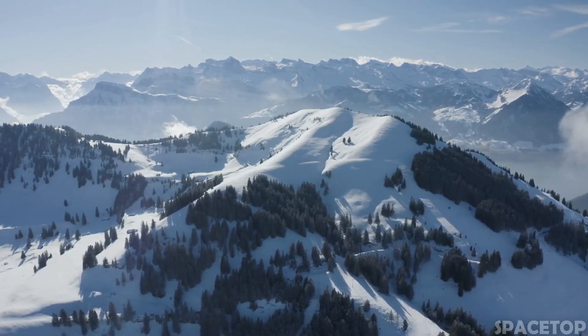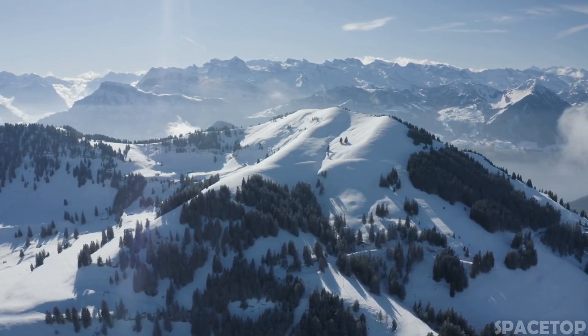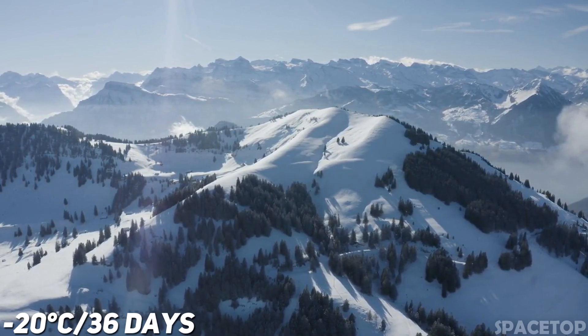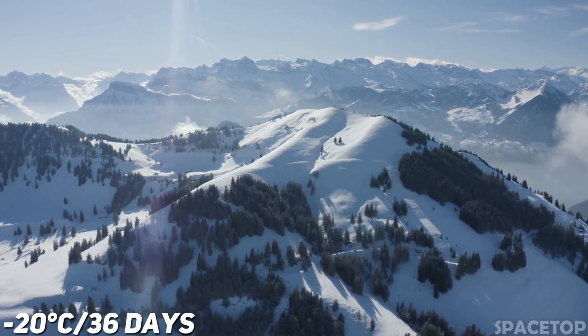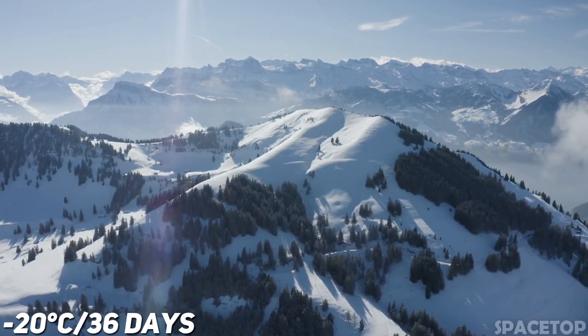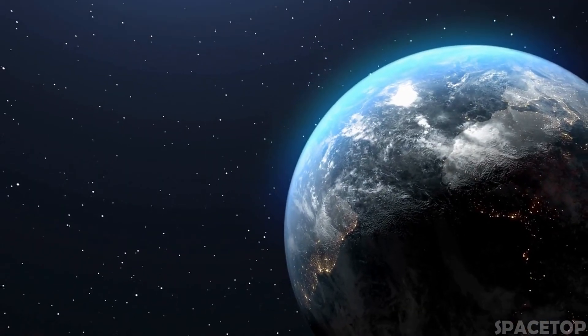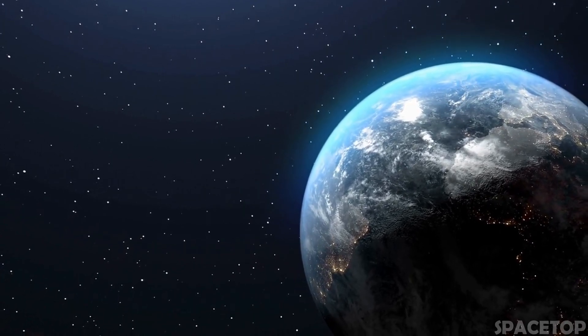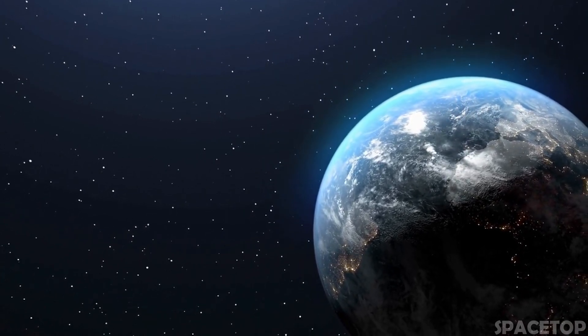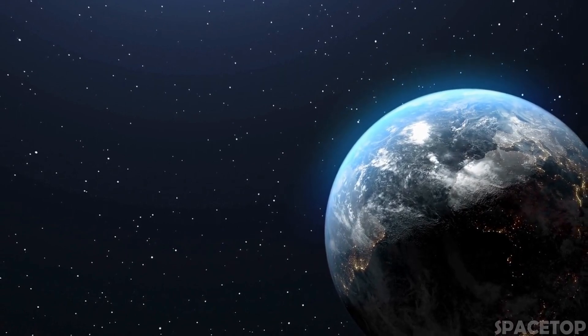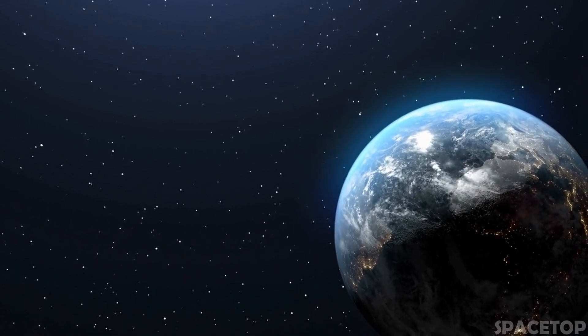The average temperature on the surface of this exoplanet reaches minus 20 degrees Celsius, and the body of the planet takes only 36 Earth days to complete a complete revolution around its parent star. By astronomical standards, the distance between us and Gliese 832C is relatively small. However,